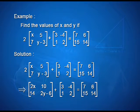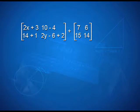Adding the corresponding elements of the two matrices, we have 2x plus 3 as the first element, 10 minus 4 as the second element of the first row, 14 plus 1 as the first element of the second row, and 2y minus 6 plus 2 as the second element of the second row, all equal to [7, 6; 15, 14]. Equating corresponding elements, we get 2x plus 3 equals 7 and 2y minus 6 plus 2 equals 14.